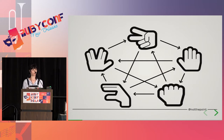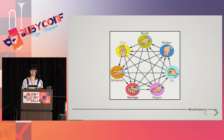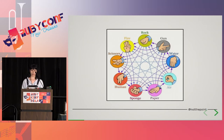Going up a gear, there's also rock, paper, scissors, lizard, Spock, which I'm sure you've seen Sheldon play on Big Bang Theory. But he never mentions this version: rock, paper, scissors, fire, water, air, sponge — or rock, paper, scissors, fire, water, air, sponge, gun, human — or rock, paper, scissors, fire, water, air, sponge, gun, human, devil, wolf.